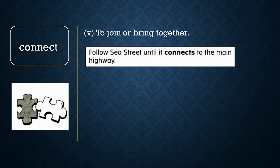To connect is to join or bring together. The first direction to Jan's house says to follow this street until it connects to the main highway. Now let's review word meaning. Yes or no: when you connect dots, you erase them from the paper. If you said no, you are correct. To connect dots means to draw a line between them or to attach them.